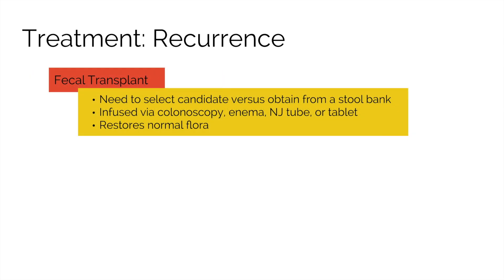If someone has multiple recurrences with failure of antibiotic therapy, consider a fecal transplant. A fecal transplant is when stool from a healthy donor is placed into a C. diff affected colon, accomplished via colonoscopy, enema, NJ tube, and possibly in the future a tablet. By infusing normal stool, the normal bacteria that line the colon are reintroduced and are able to compete against C. diff to help clear the infection.